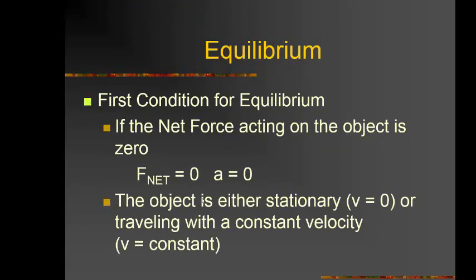Equilibrium — first condition for equilibrium. If the net force acting on the object is zero, then F net equals zero, which means acceleration is zero. Because F = ma, if F is zero and mass is not zero, then acceleration must be zero. The object is either stationary or traveling with constant velocity.